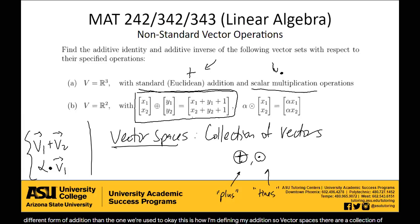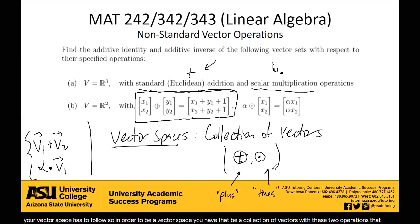Beyond that, there are like these 10 rules that your vector space has to follow. So in order to be a vector space, you have to be a collection of vectors with these two operations that follow these 10 rules. In future videos, we might talk about those 10 rules — there are a lot of them.